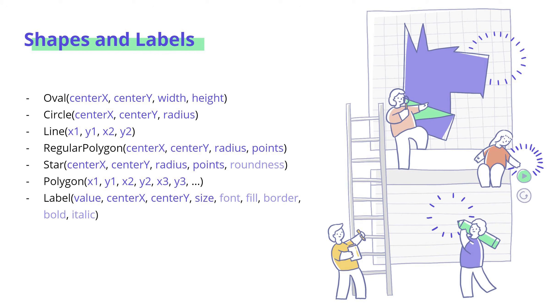And finally, we have label, which allows you to put text onto the canvas. Value is whatever text you want. It can be hi, hello, click here, welcome to the game, whatever. Then you have center x, center y, and the size. And here are some optional parameters, which include font, fill, border, bold, and italic, with bold and italic being true or false.